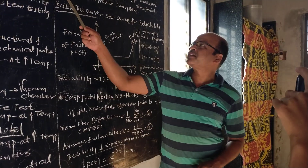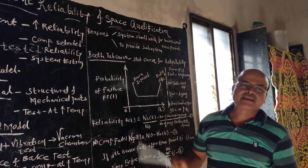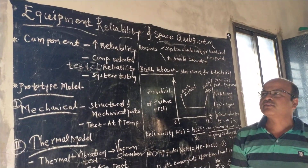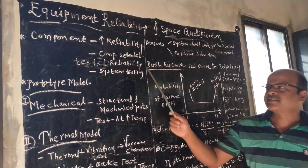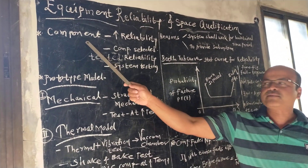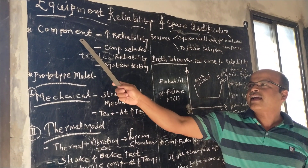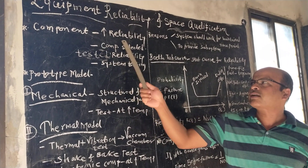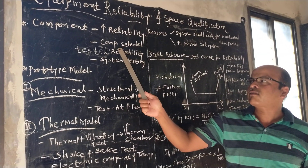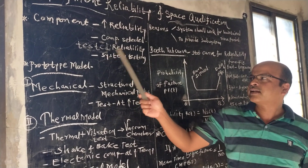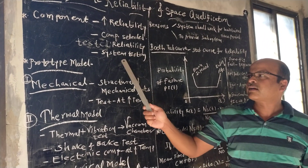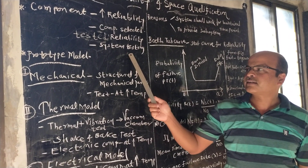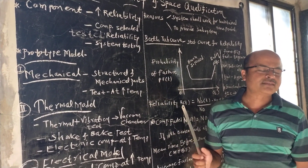In satellite system design, different components are used and these components are tested at different drastic conditions. The components are tested for high reliability and selected based on those reliability tests. System testing is also performed at ground level before components are approved for use.